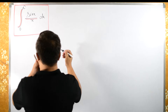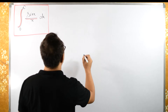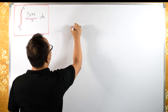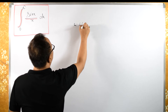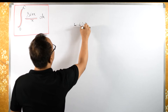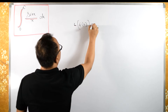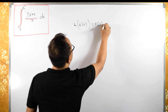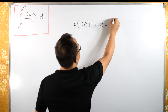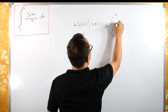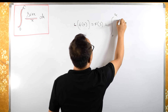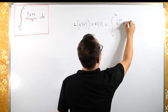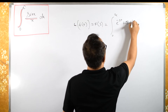The definition of Laplace Transform is: L{f(t)} = F(s) = ∫₀^∞ e^(−st) f(t) dt.